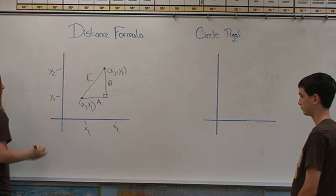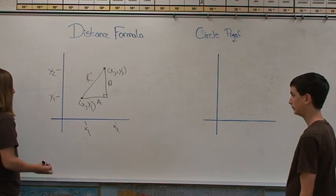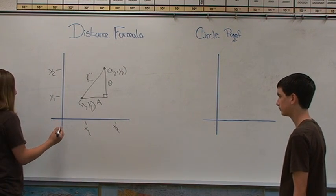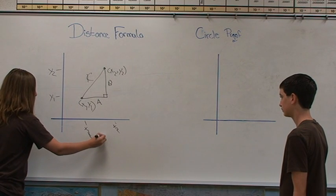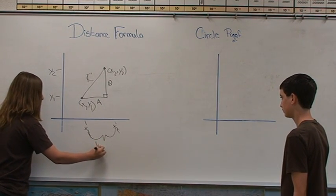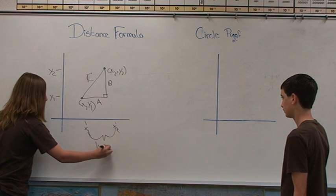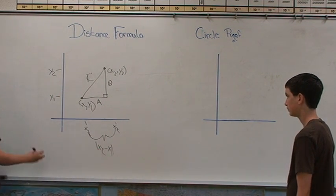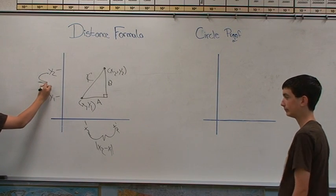One dimensional distance is the absolute value, subtracting the two. So let's do the absolute value of the x1, x2 point. That's its one dimensional distance. And we'll do the one dimensional distance for the y, or the B leg.